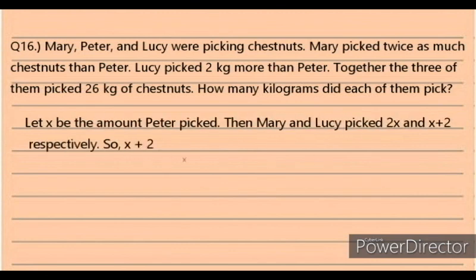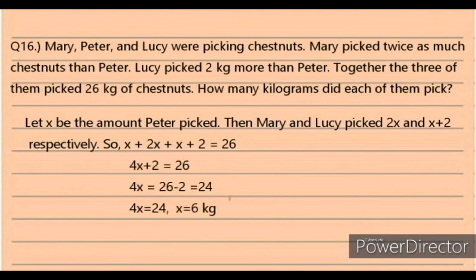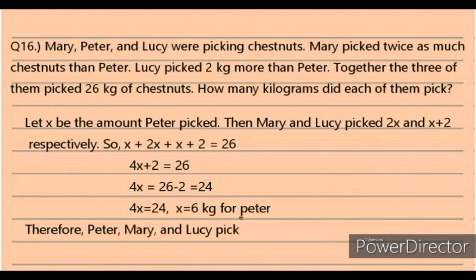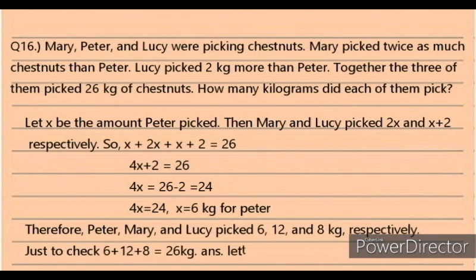Solution: Let X be the amount Peter picked. Then Mary picked 2X and Lucy picked X plus 2. So X plus 2X plus (X plus 2) equals 26. That gives 4X plus 2 equals 26, so 4X equals 24, meaning X equals 6 kilograms for Peter. Therefore Peter, Mary, and Lucy picked 6, 12, and 8 kilograms respectively. Check: 6 plus 12 plus 8 equals 26 kilograms. The answer is letter D.